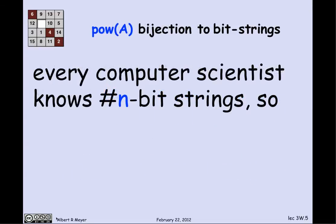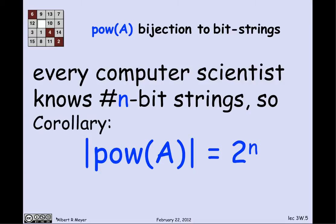Every computer scientist knows how many n-bit strings there are — there are 2^n of them. Therefore the power set of A has 2^n elements. Since n was the size of A, we have this nice formula: the size of the power set of a finite set A is 2 to the power of |A|.